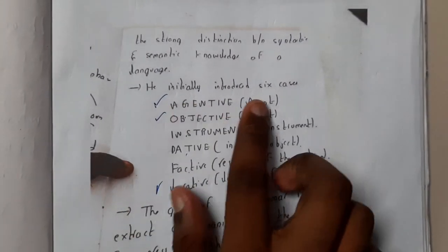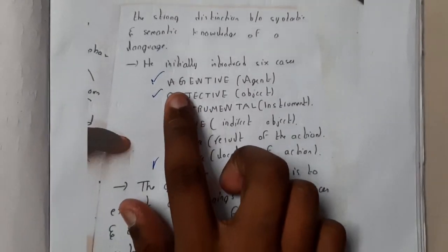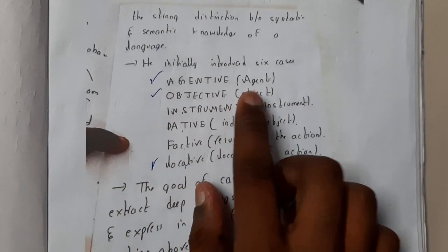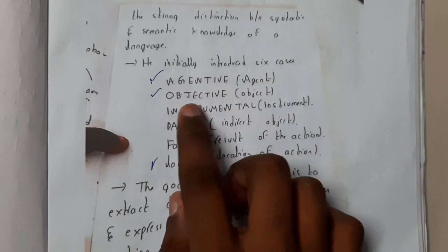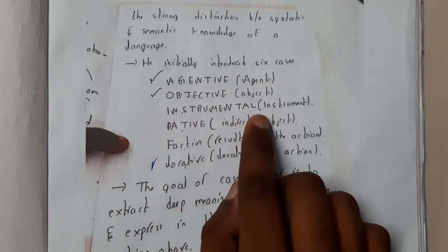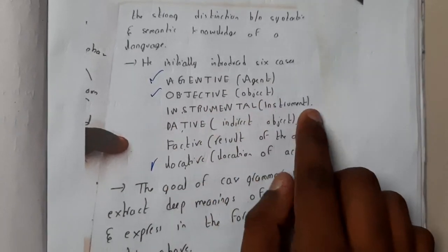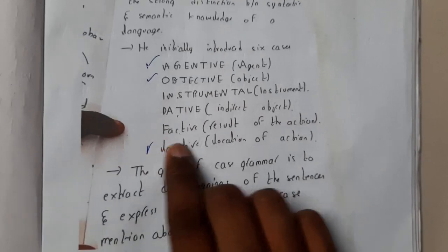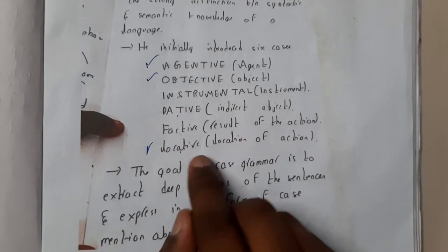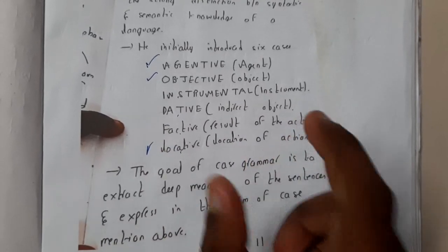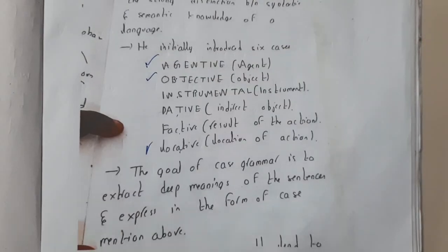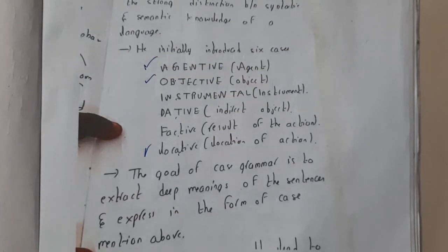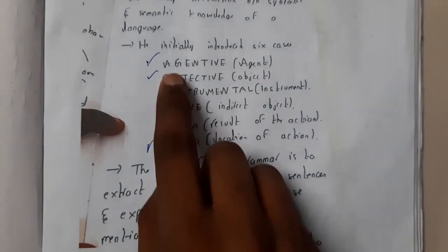He initially introduced six different cases. Those are: Agent — the doer; Objective — the object; Instrumental — the instrument; Dative — the indirect object; Factive — the result of the action; and Location — the location of the action. These are the six cases he had defined.